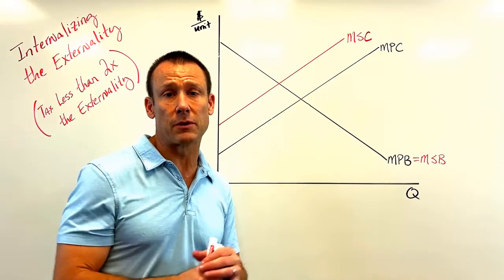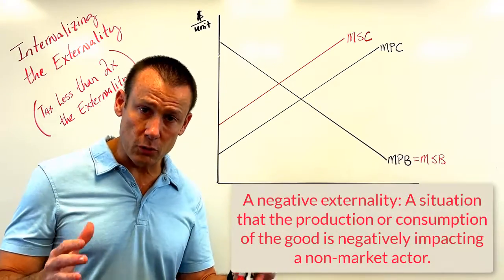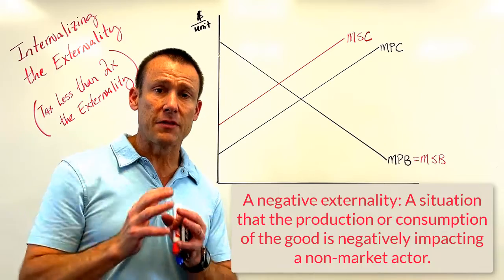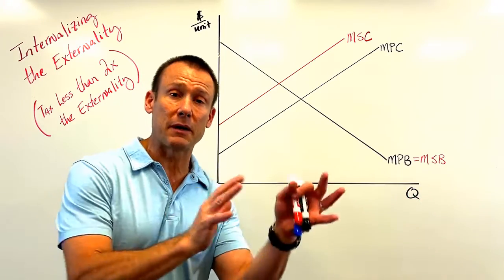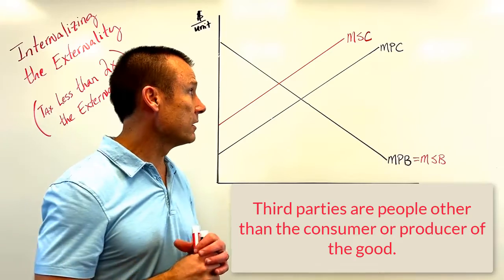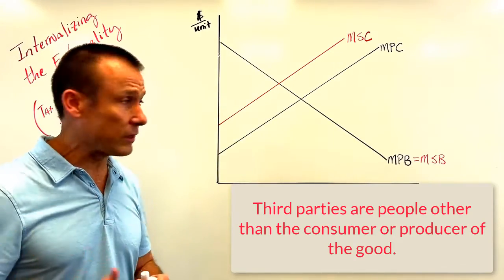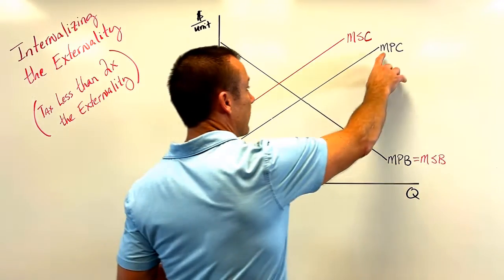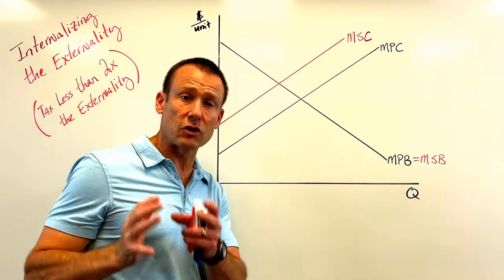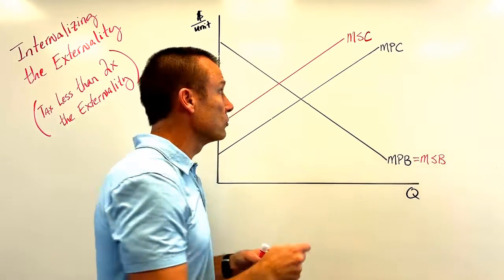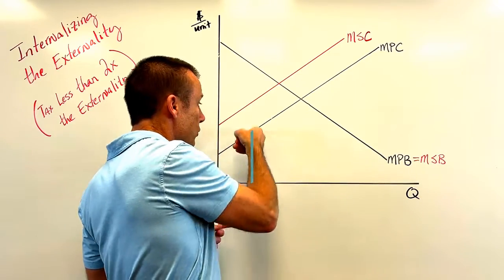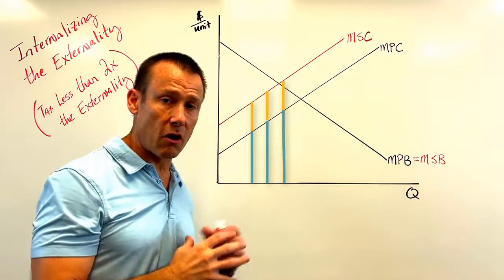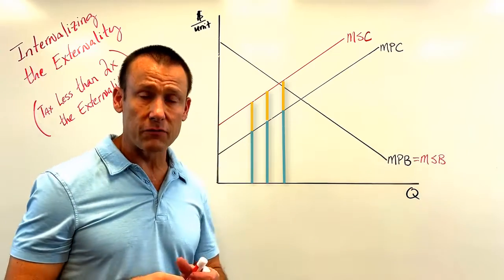In this graph we have a negative externality from production, which means when the good is being produced, somebody other than the producer or consumer is incurring a cost. There's this external cost that third parties are incurring — and third parties means anybody but the market actors. We can see that the MSC (marginal social cost) is greater than the marginal private cost. The marginal private cost is just the cost the producers are incurring, while the marginal social cost includes all costs producers incur plus the additional cost third parties are incurring.